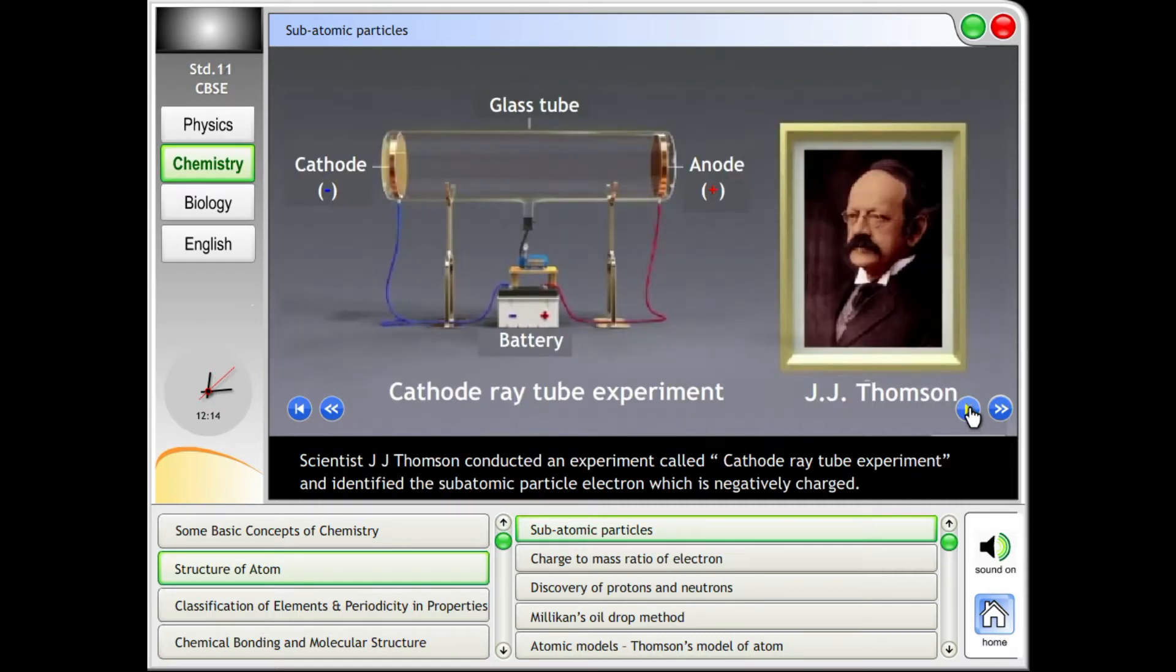Scientist J.J. Thomson conducted an experiment called cathode ray tube experiment and identified the subatomic particle electron, which is negatively charged.